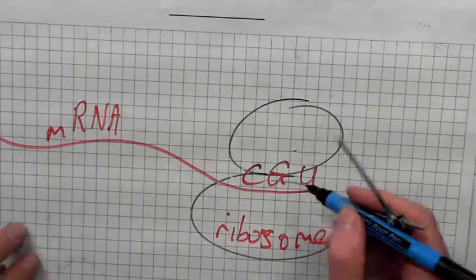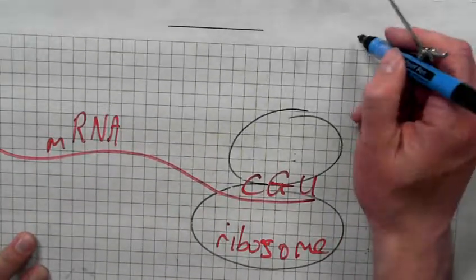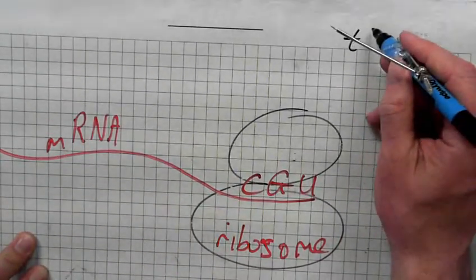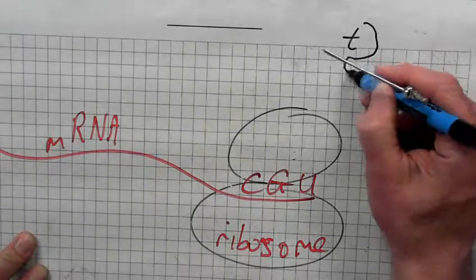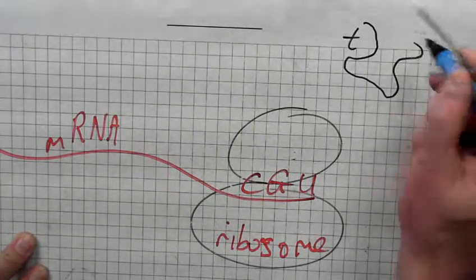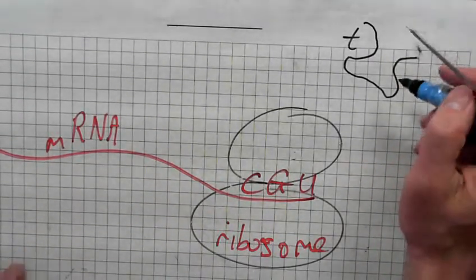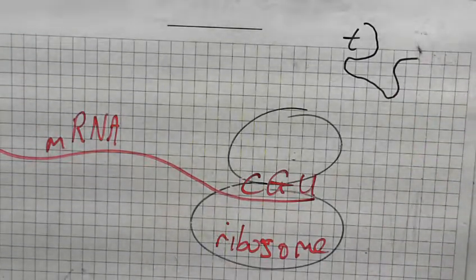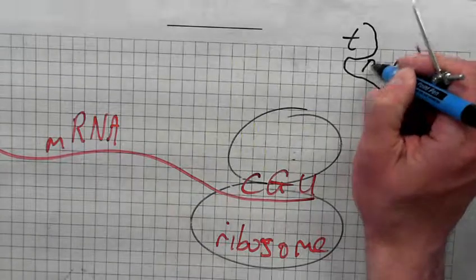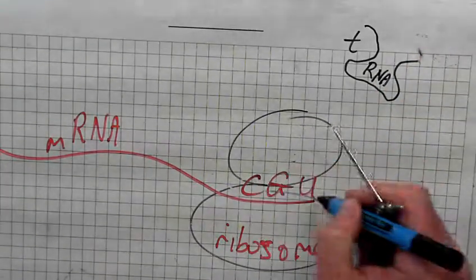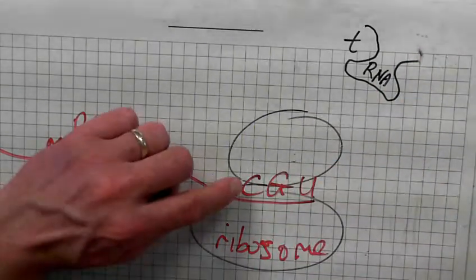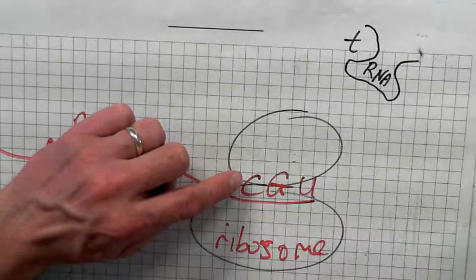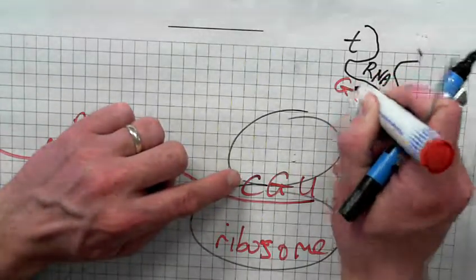The ribosome will ask a tRNA molecule which is floating in the cytoplasm. Which tRNA molecule will it ask to come in? One that is associated with this. So what's associated with C on RNA? G.